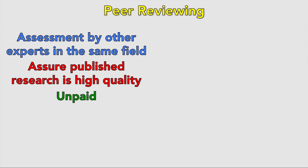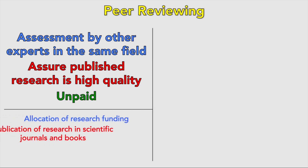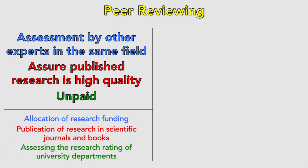Peer review serves three purposes: to allocate research funding, in the publication of research in scientific journals or books, and in assessing the research rating of university departments. But it does have criticisms that you need to know — it's expensive, highly subjective, prone to bias, and easily abused.